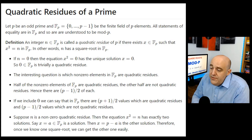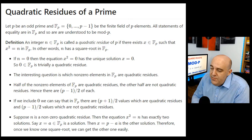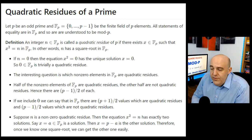It turns out that half of the non-zero elements are quadratic residues and half are not, which means there are (p minus 1)/2 of each. Since p is odd, p minus 1 is even and definitely divisible by 2, so (p minus 1)/2 makes sense, as does (p plus 1)/2. If we include 0 among the quadratic residues, there are (p plus 1)/2 quadratic residues and (p minus 1)/2 elements that are not quadratic residues in fp.